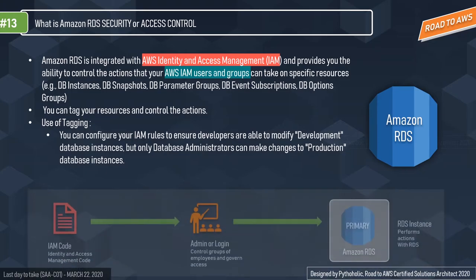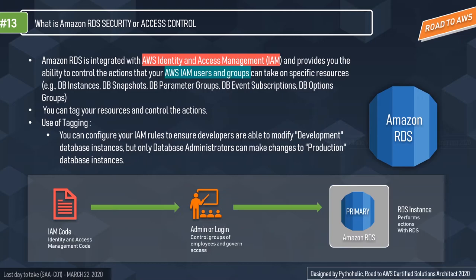When you first create a DB instance with Amazon RDS, you create a master user account used only within Amazon RDS to control access. This master user account is a native database user that allows you to log in with all database privileges. You specify the master username and password when creating the instance. Once connected, you can create additional user accounts to restrict who can access your database instances.